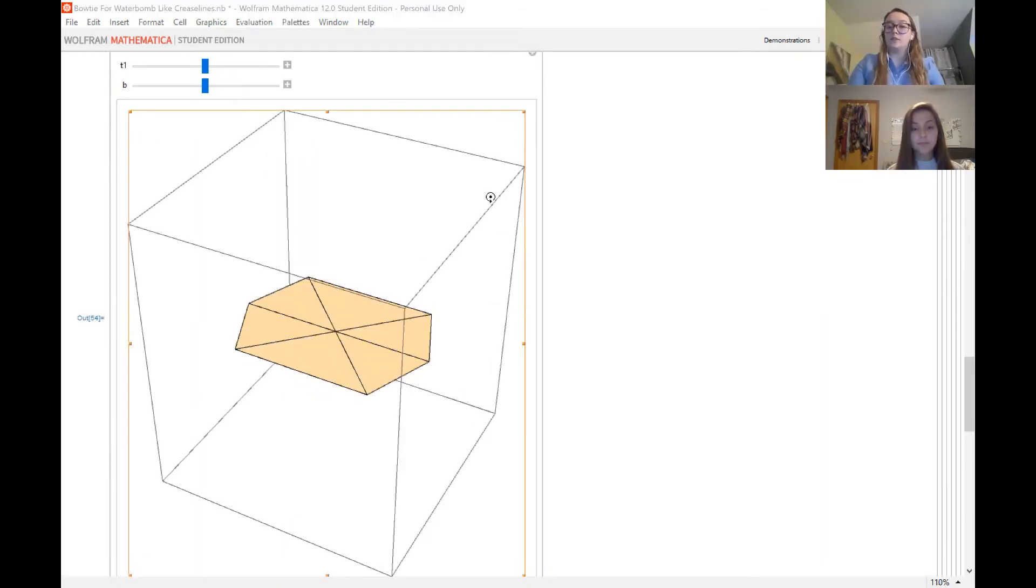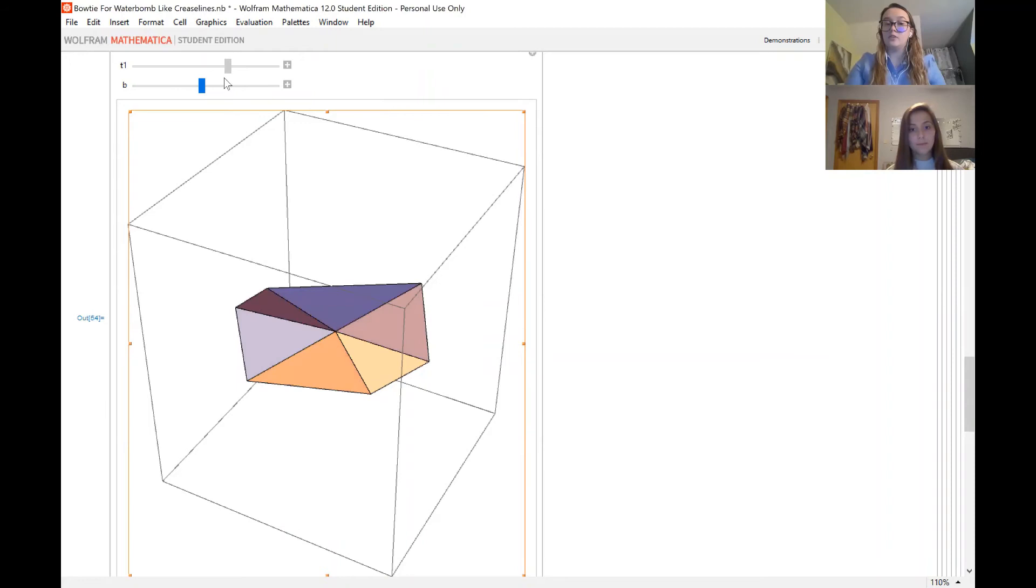This is mode one of the generalized bow tie, which again has an angle b slider as you can see, which changes like in our poster. And again, t1 actually folds the paper.